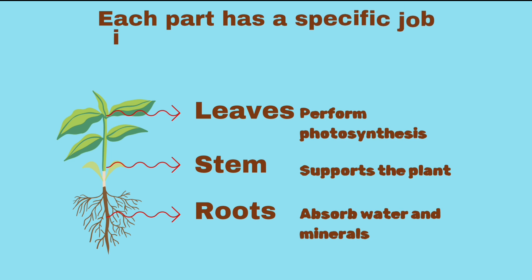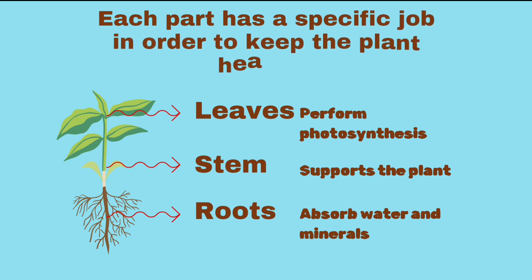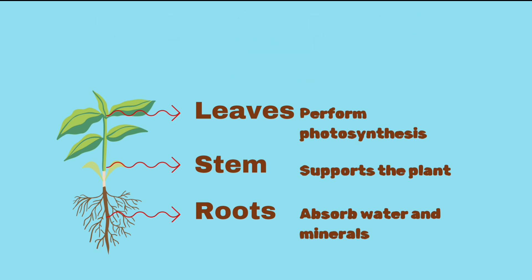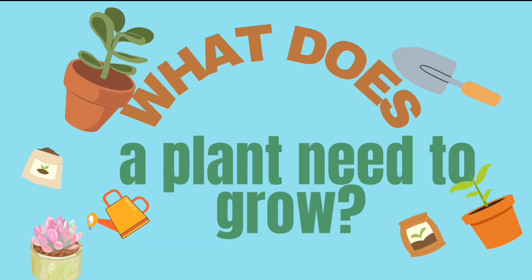Each part has a specific job in order to keep the plant healthy. Leaves perform photosynthesis. The stem gives support to the plant, transporting, storing, and reproducing. The roots absorb water and minerals.